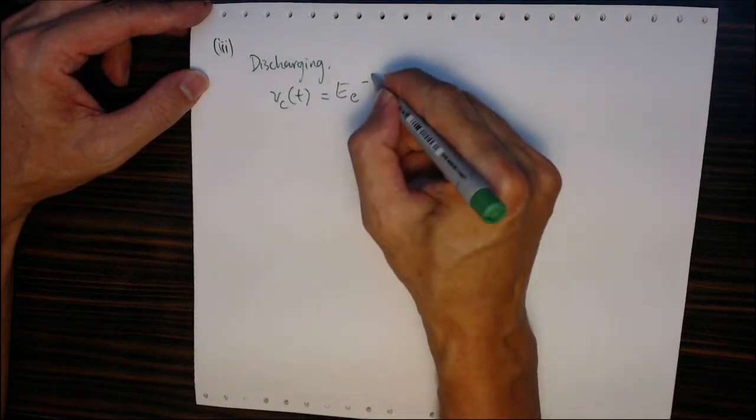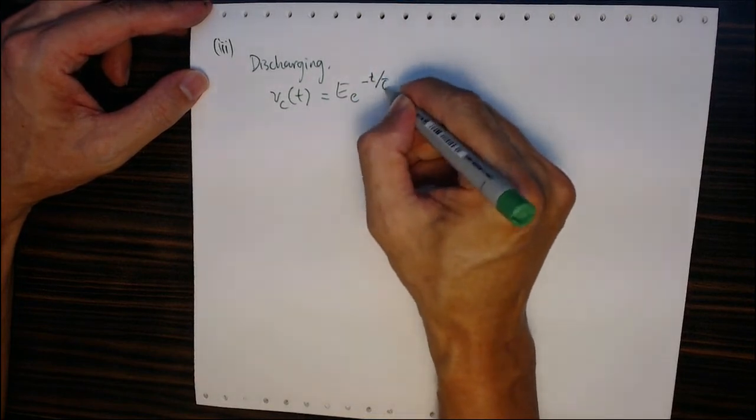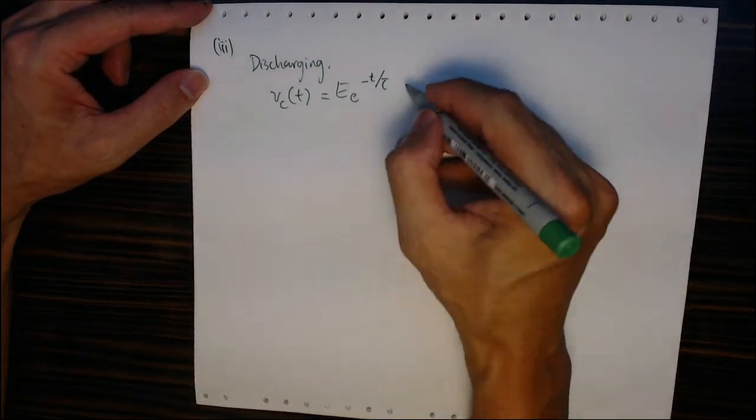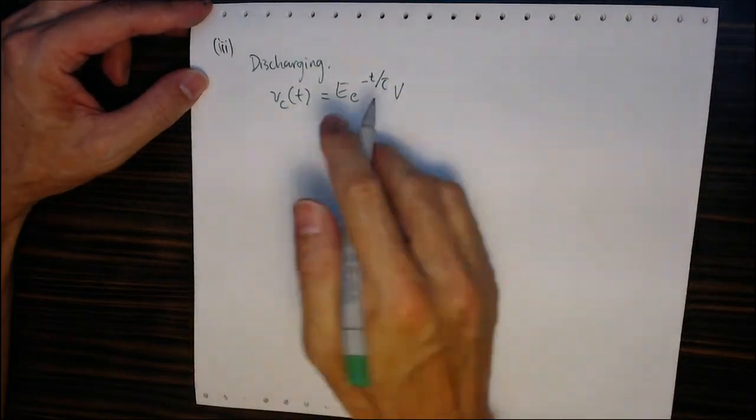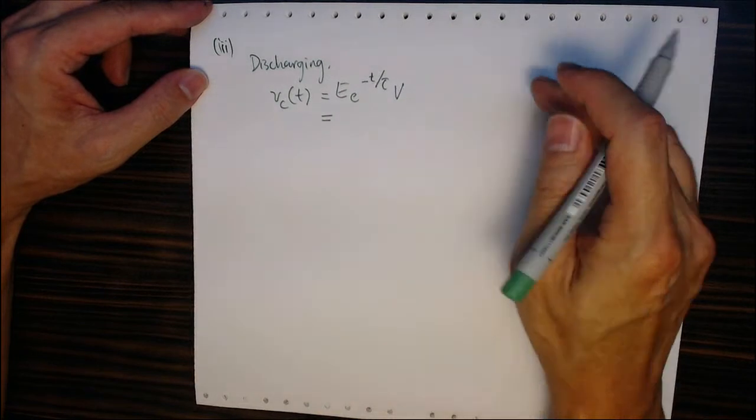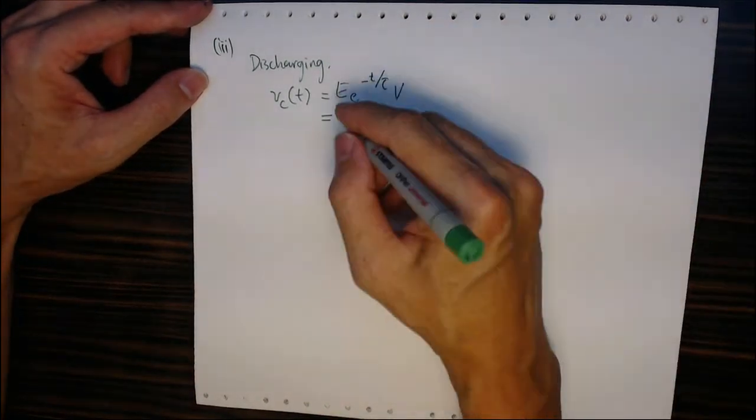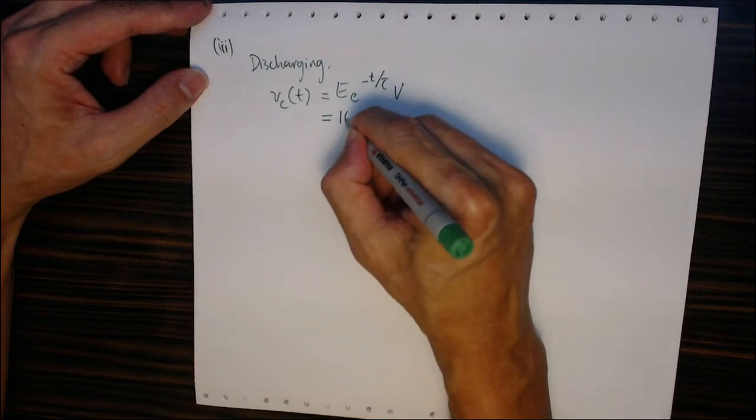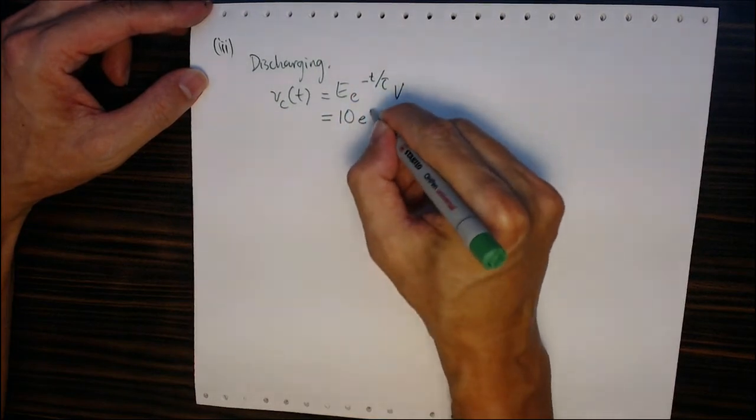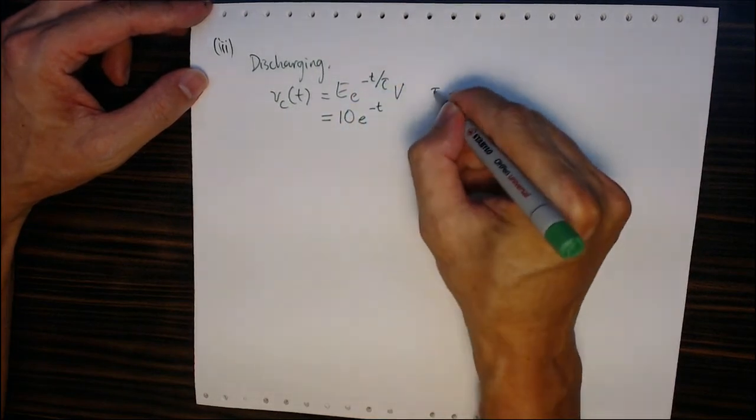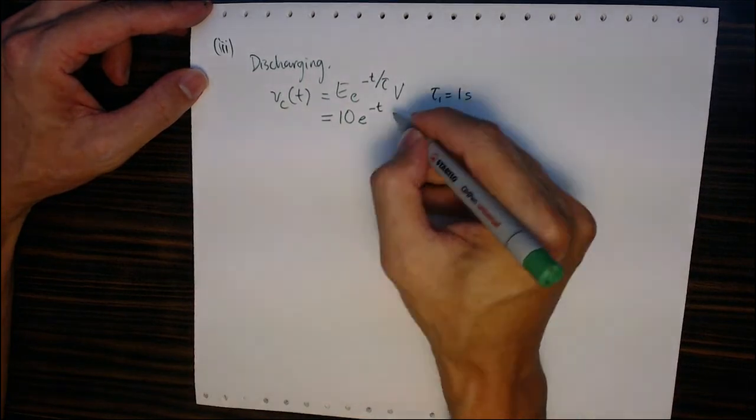For a discharging circuit, the characteristic of a capacitor discharging is given by the formula E·e^(-t/τ). The voltage decays exponentially. For capacitor discharging, the maximum voltage is the supply voltage, which is 10 volts. Since τ equals 1 second, the expression for Vc(t) is 10e^(-t) volts.